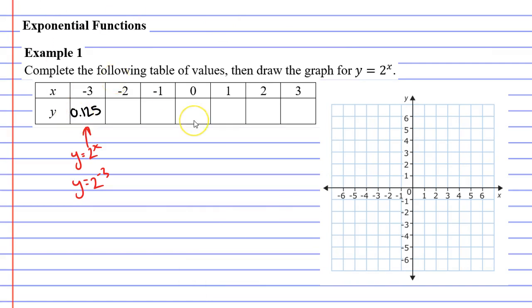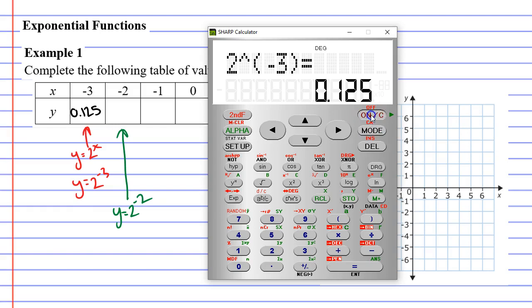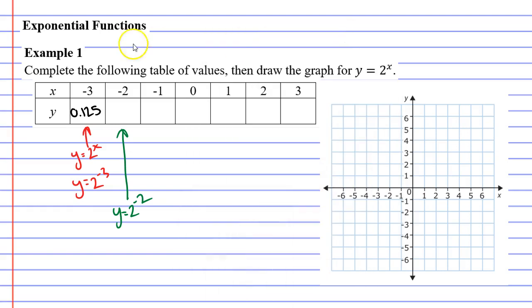When we do our next one, this time x is negative 2, so this time I'm going to go y equals 2 to the power of x or 2 to the power of negative 2. So 2 to the power of negative 2 gives us 0.25 this time. So what I'm going to do is I'm going to pause and finish this off. I would like you to also pause and fill these in on your own and see if you get the same numbers that I get.